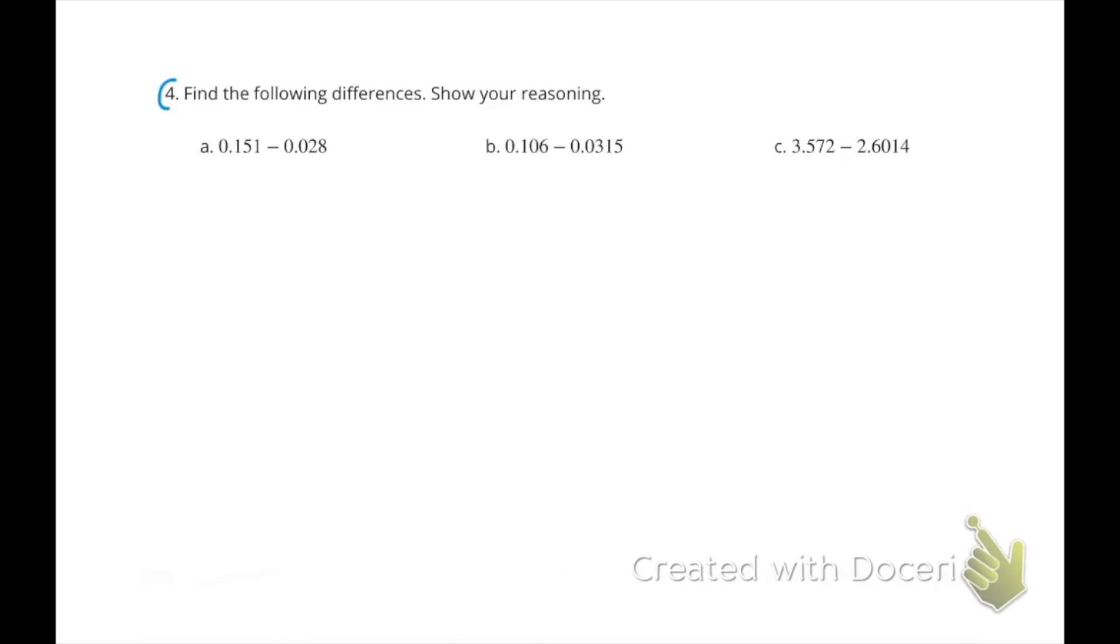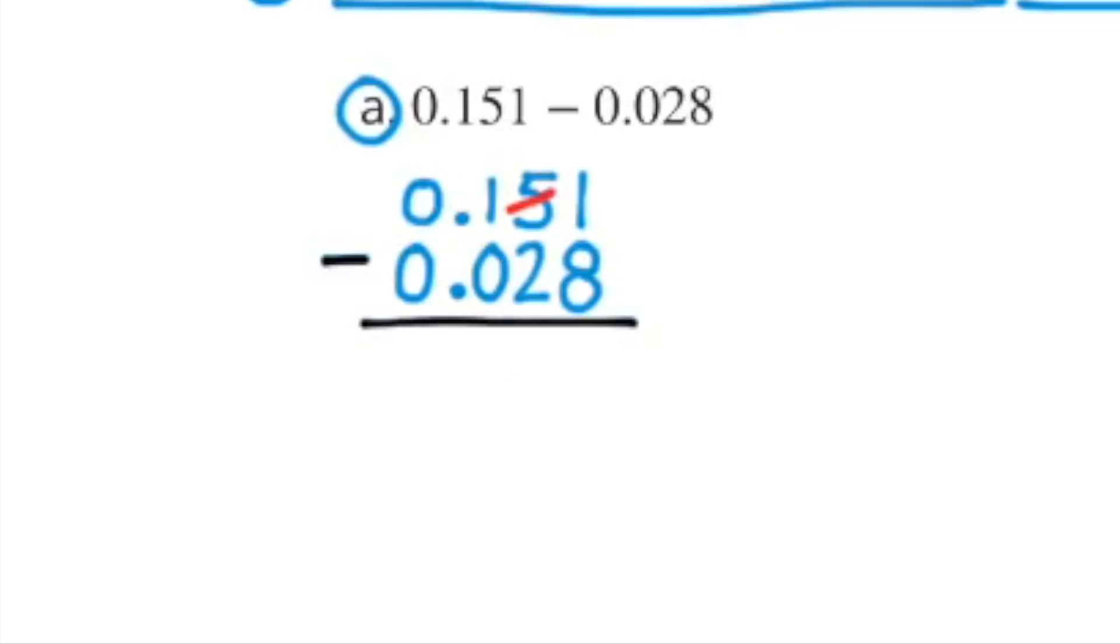Number 4: Find the following differences. Show your reasoning. A: 0.151 minus 0.028 equals 0.123.